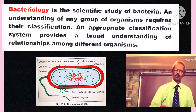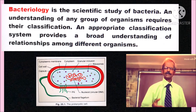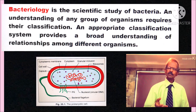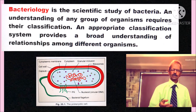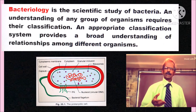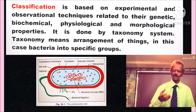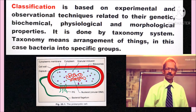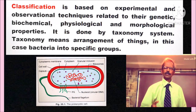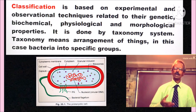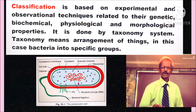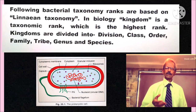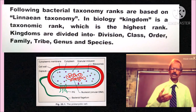Bacteriology is the scientific study of bacteria. An understanding of any group of organisms requires their classification. An appropriate classification system provides a broad understanding of relationships among different organisms. Classification is based on experimental and observational techniques related to their genetic, biochemical, physiological and morphological properties. It is done by the taxonomy system, and taxonomy means arrangement of things — in this case bacteria — into specific groups. The following bacterial taxonomy ranks are based on linear taxonomy.